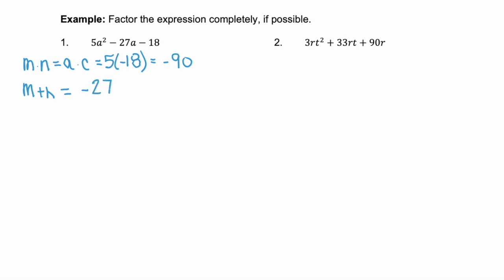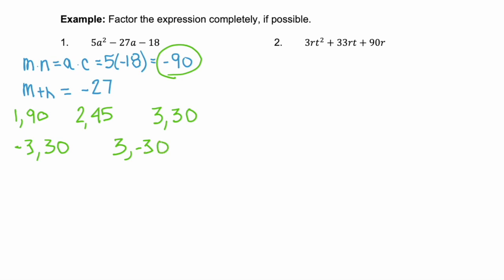Those are big numbers. So let's look for factors of negative 90. 1 and 90 — that could never add to negative 27. What about 2 and 45? No — it still won't give us negative 27. What about 3 and 30? If we have negative 3 and positive 30, that multiplies to negative 90 but adds to positive 27. But if we use positive 3 and negative 30, that adds to negative 27. So we can use these factors to rewrite our middle term.